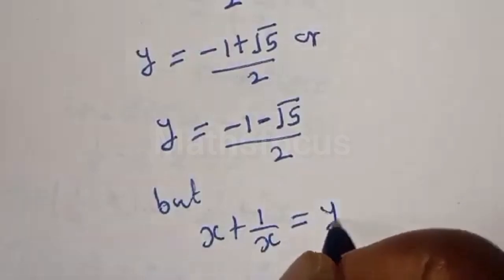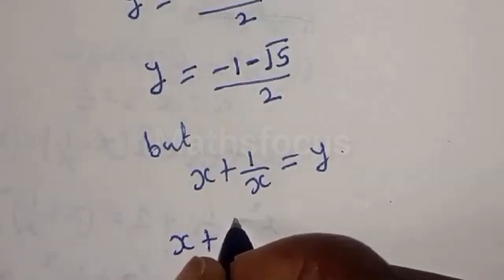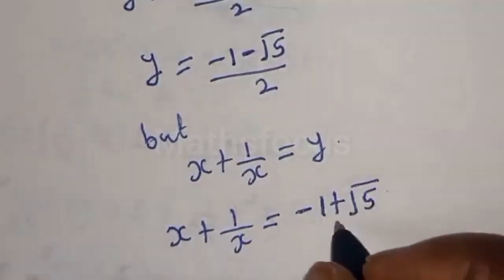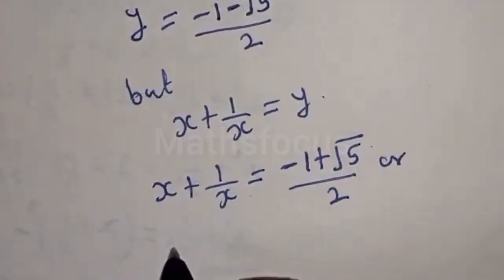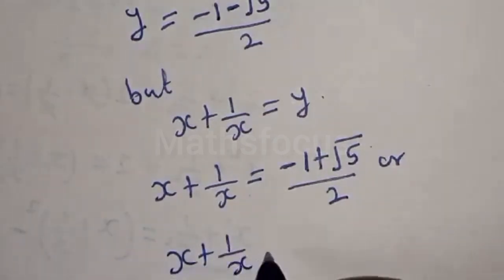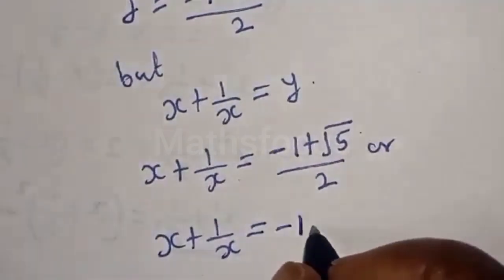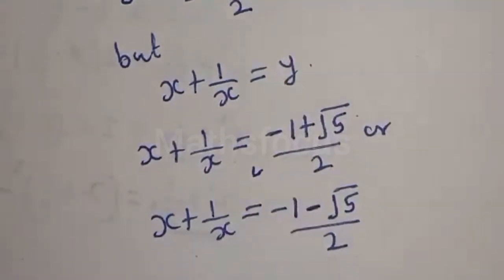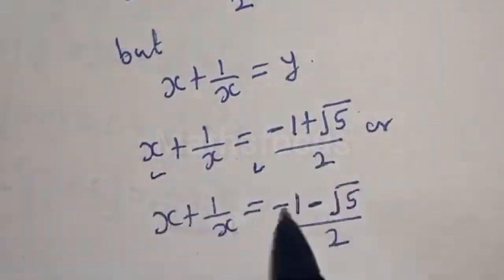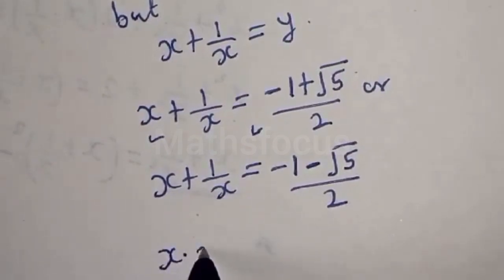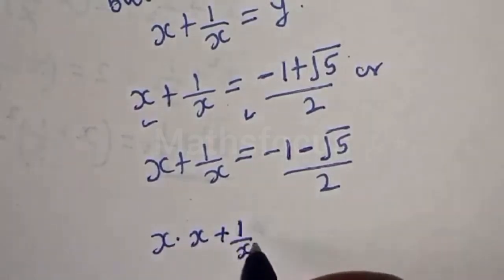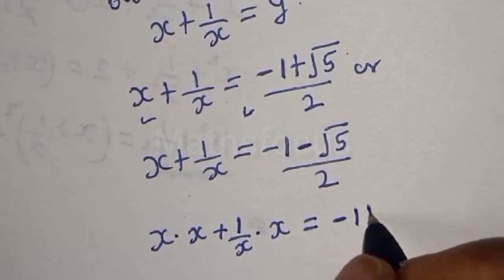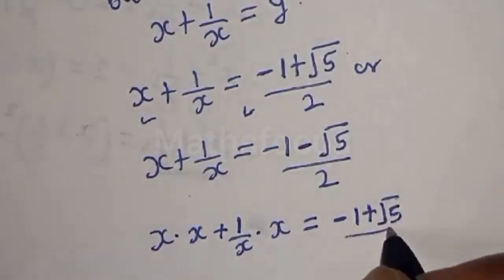So y equals minus 1 plus square root of 5 over 2, or y equals minus 1 minus square root of 5 over 2. Recalling that y equals x plus 1 over x, let's work with the first case. Multiplying all through by x: x times x plus 1 over x times x equals minus 1 plus square root of 5 over 2, times x. So x squared plus 1 equals minus 1 plus square root of 5 over 2, times x.